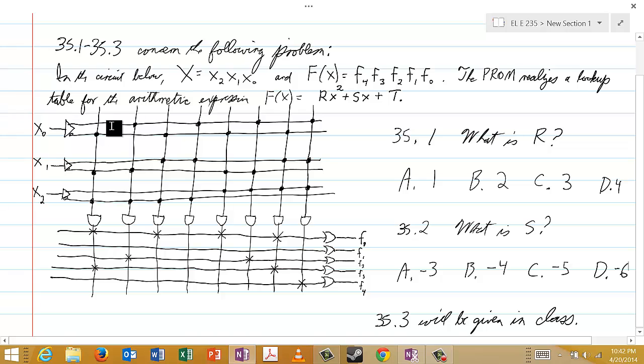And I just want to make sure that you can read all of this properly. These three inputs are x0, x1, and x2. And I believe all of that is clear.